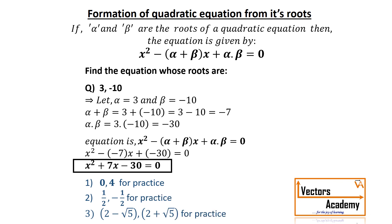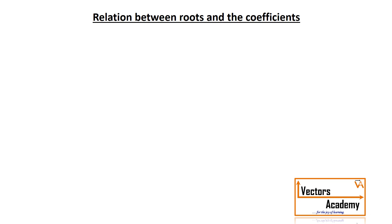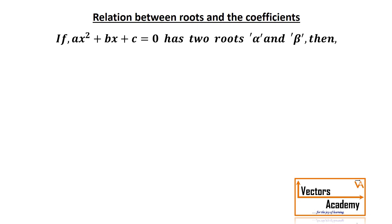Now let us understand the relation between the roots of the equation and its coefficients. The roots are usually denoted by α and β, and the coefficients are a, b, and c. The relation is: the sum of roots α + β = −b/a, and the product of roots α × β = c/a. Here a, b, and c are the coefficients of the quadratic equation, while α and β are its roots. Let us see how questions are asked based on these formulas.